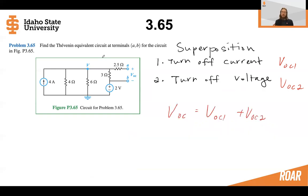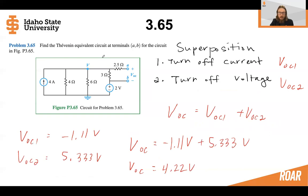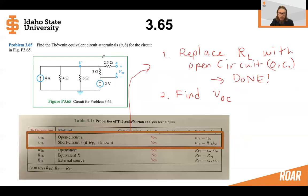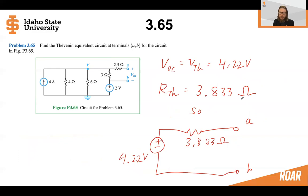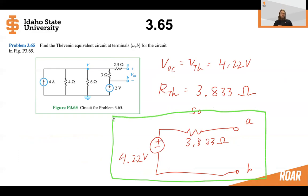Now we know that the total open circuit voltage is the superposition of V_OC1 plus V_OC2 — combining the effects of the current source and the voltage source gives us a total V_OC of 4.22 volts, which is the Thevenin voltage. With a Thevenin voltage of 4.22 volts and a Thevenin resistance of 3.83 ohms, we can draw the final Thevenin equivalent circuit. Hopefully this helped you understand both Thevenin equivalent circuits and the superposition method of analysis. Thanks for watching, and I'll see you in the next video.